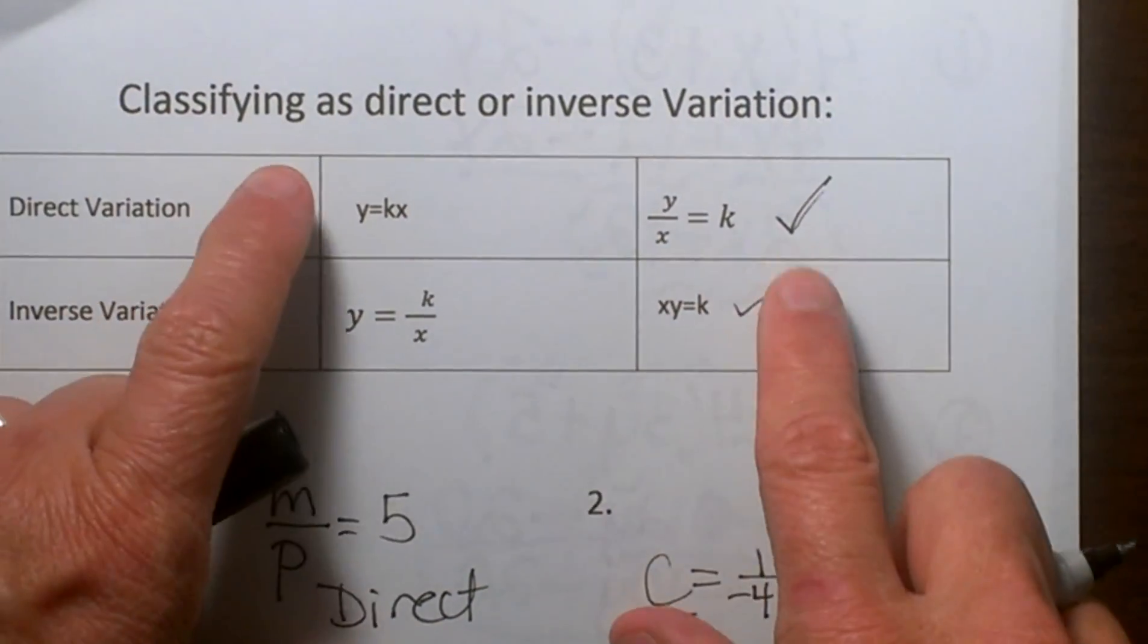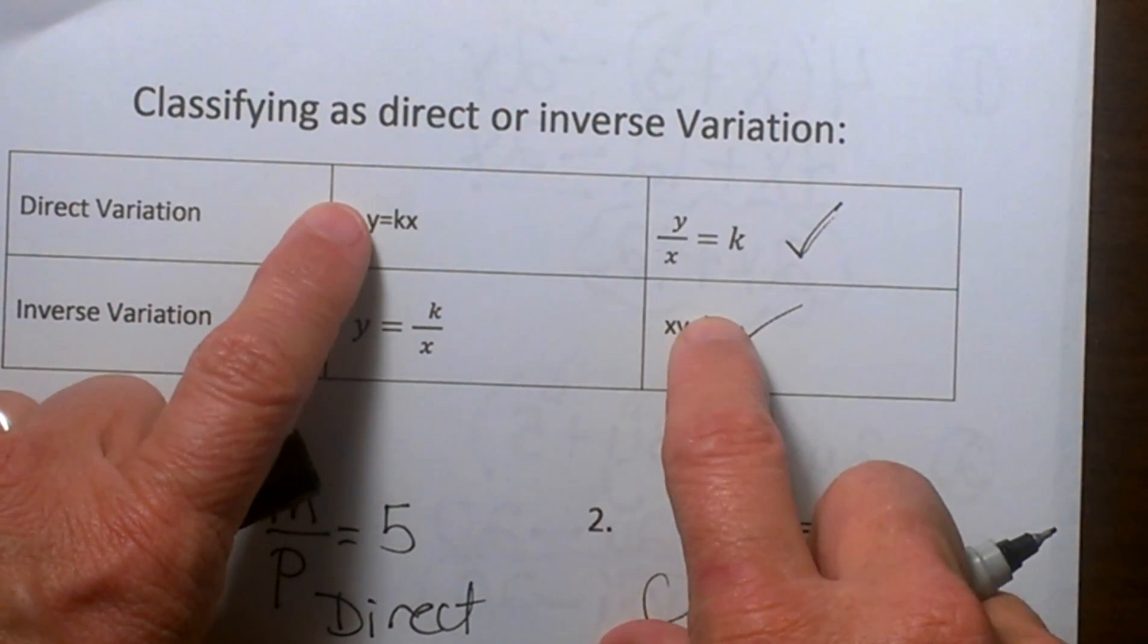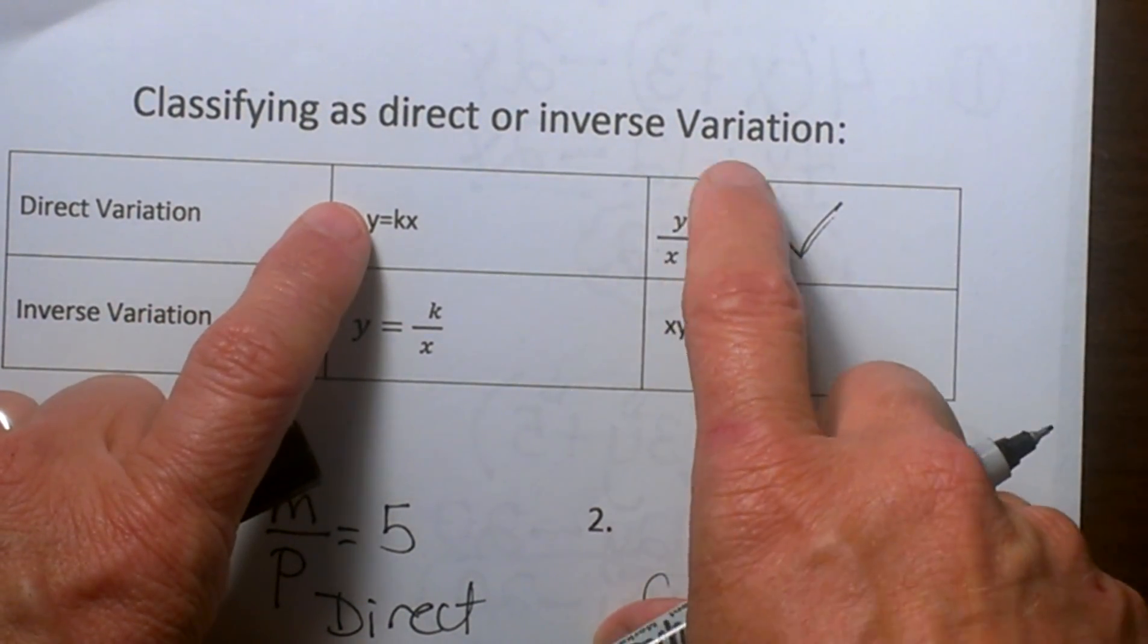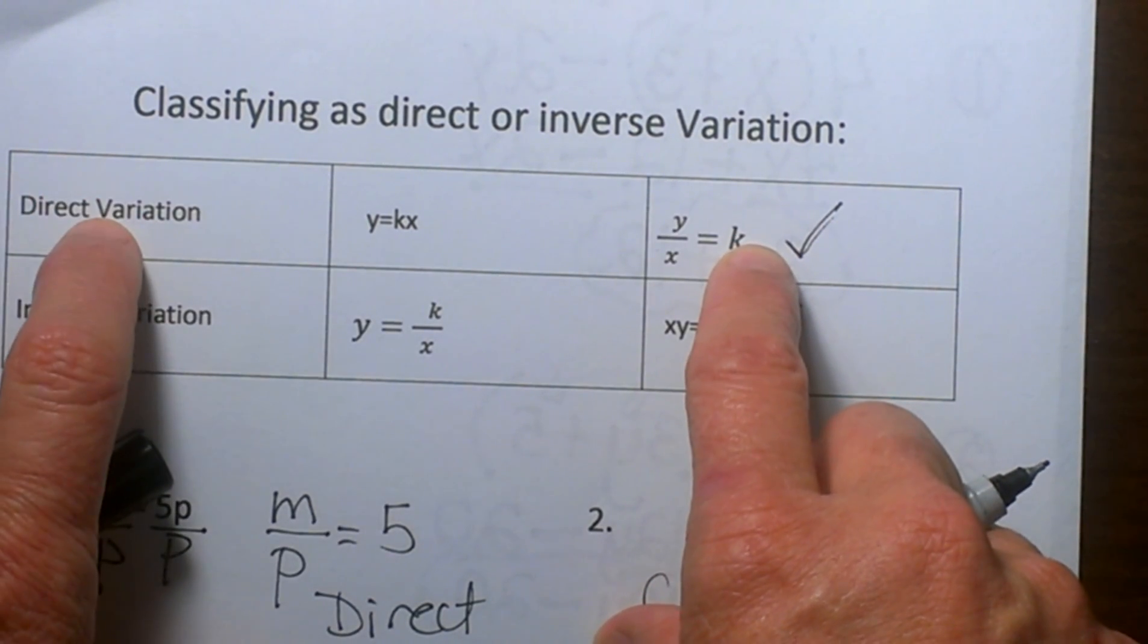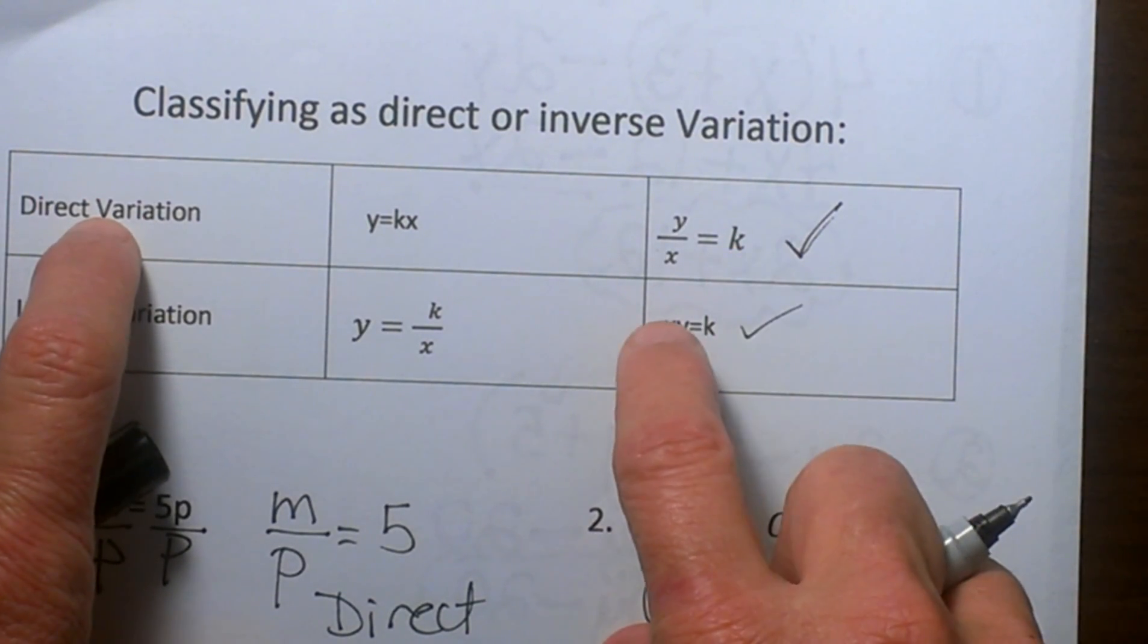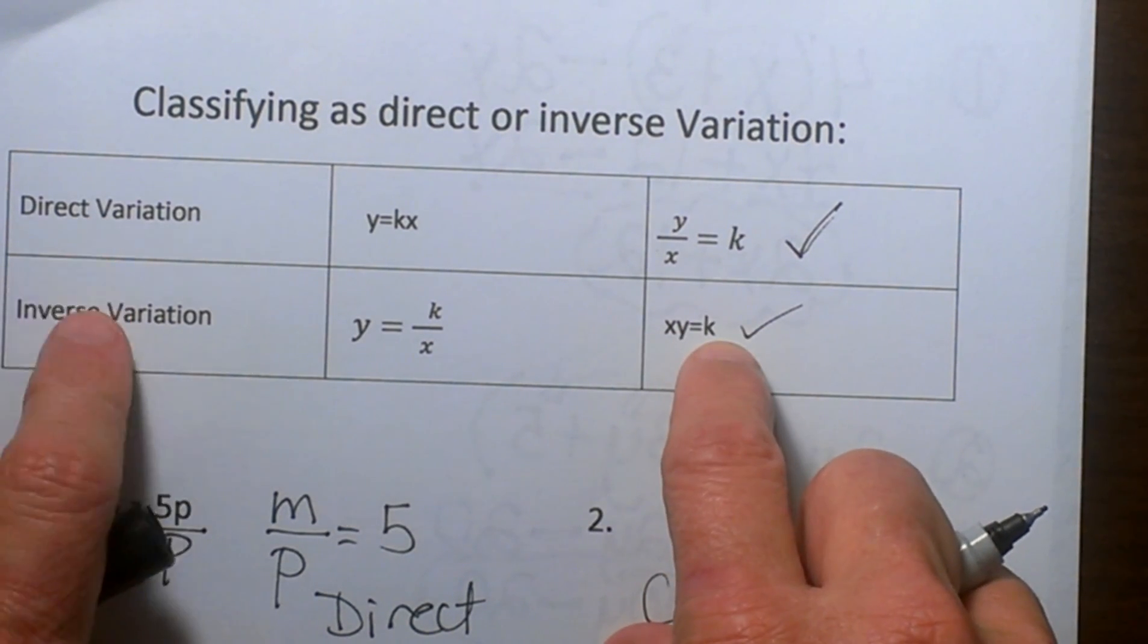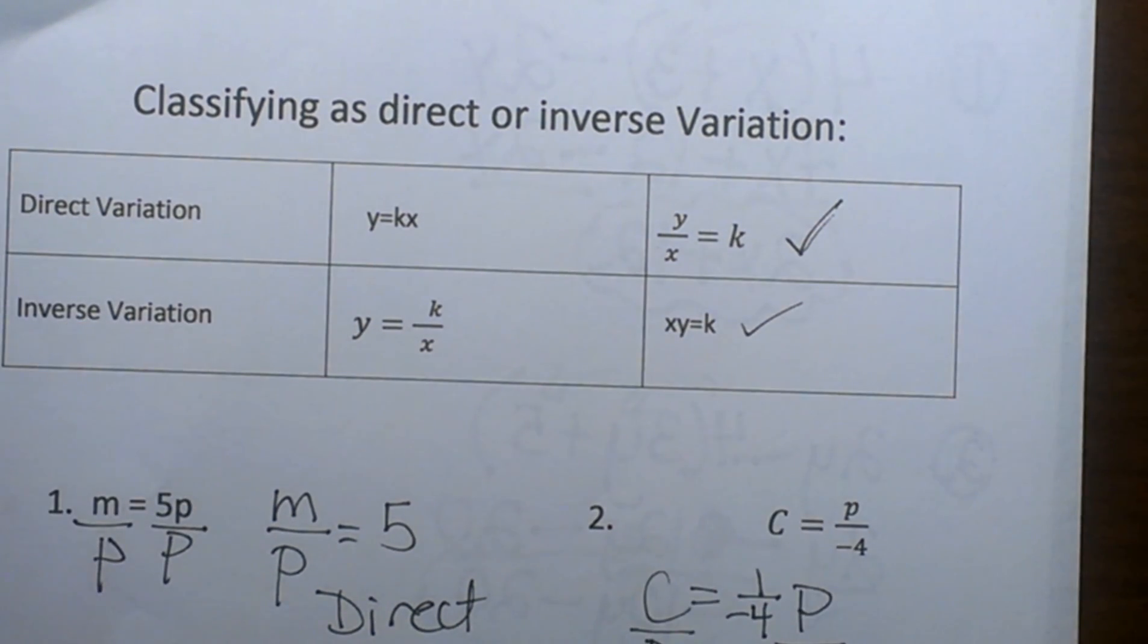If you have the two variables multiplying to a constant that is an inverse. I hope this video was helpful on figuring out how to classify as direct or inverse variations.